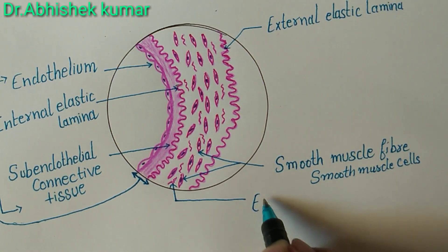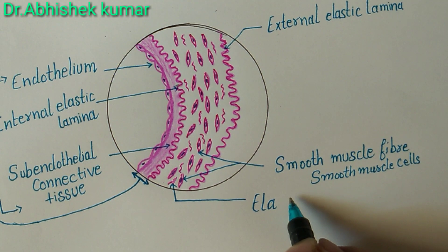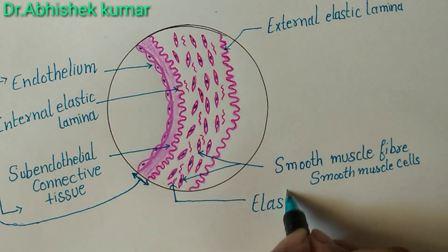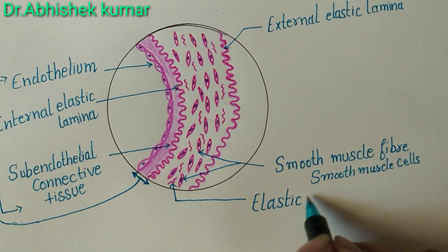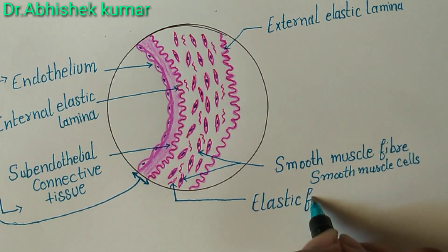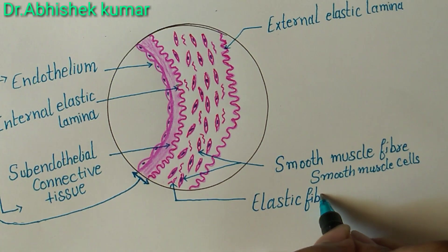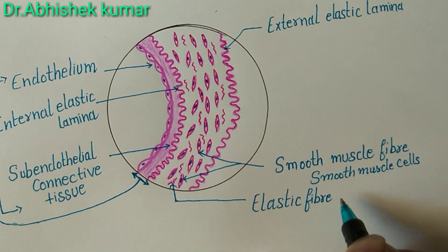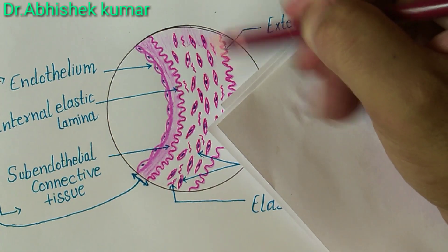These are elastic fibers, and very few collagen fibers are also intermixed with these smooth muscle cells. So we label these as elastic fibers.